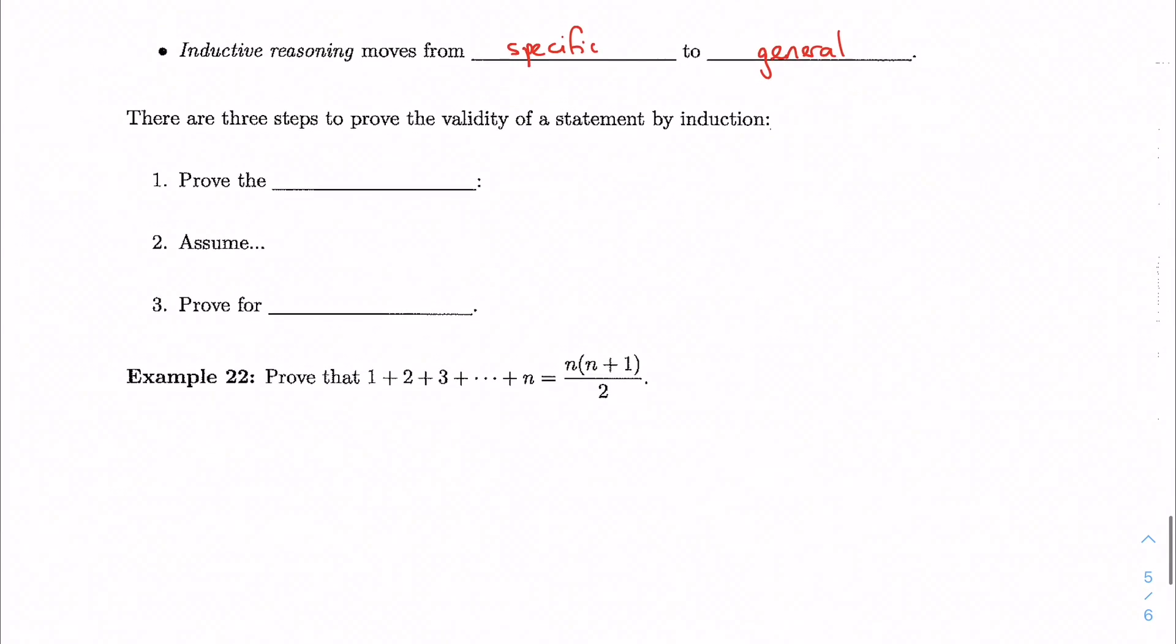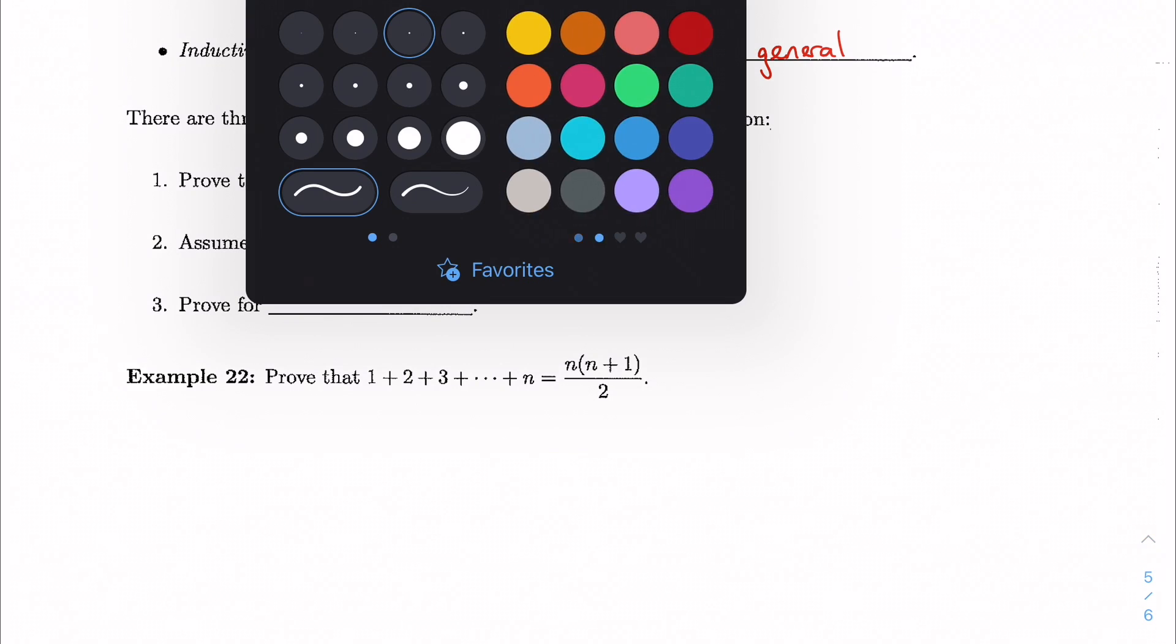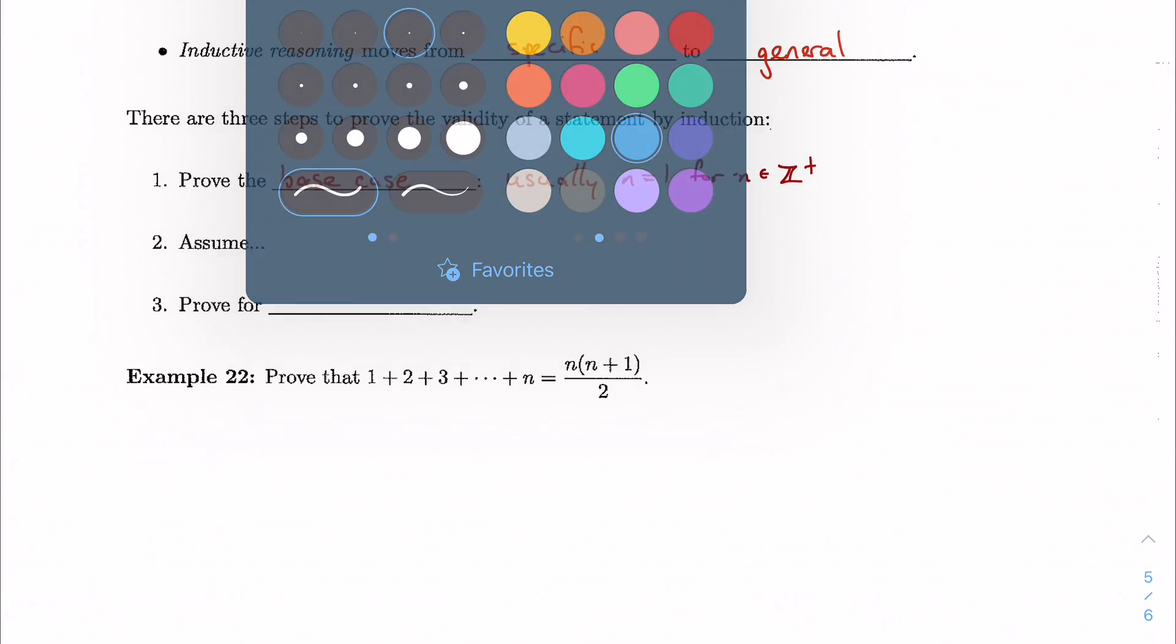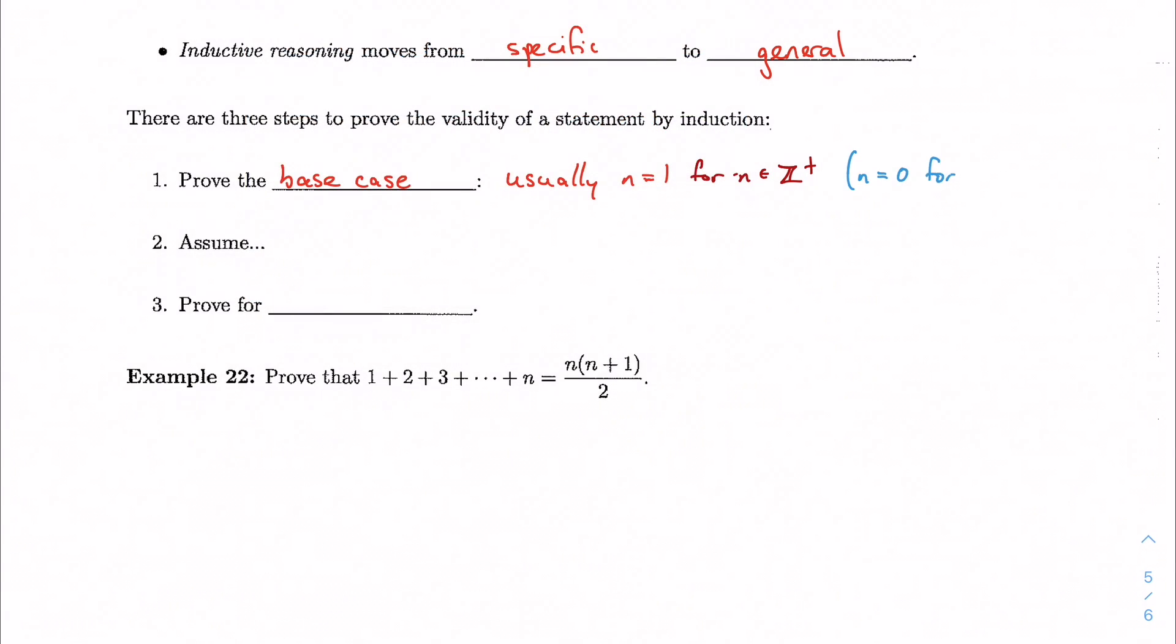There are three steps to do this. We prove what we call the base case, and this is my specific example. Usually, the base case is n equal to 1 if I tell you that n is a positive integer. If I were to say natural numbers, this typically would mean n equal to 0.